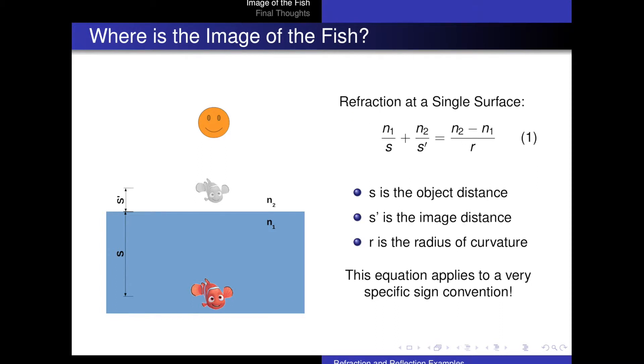Well, we can look at the equation for refraction at a single surface where n1 and n2 are the indices of refraction, s is the object distance, s prime is the image distance, and r is the radius of curvature of the boundary of the system.